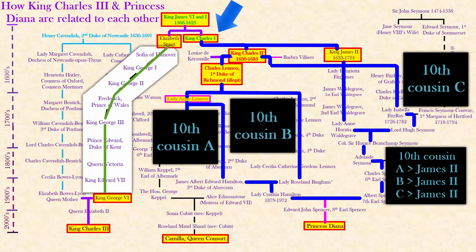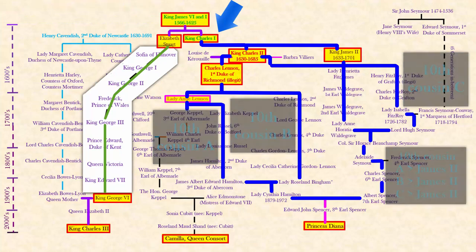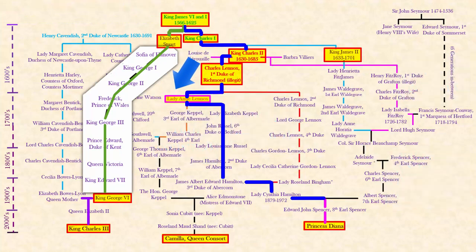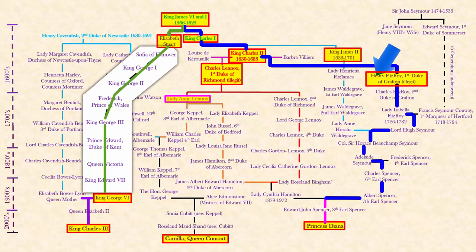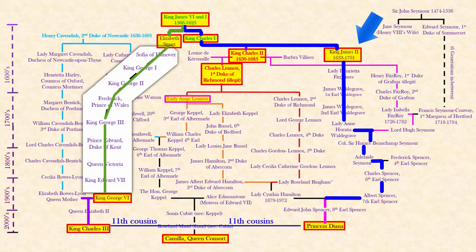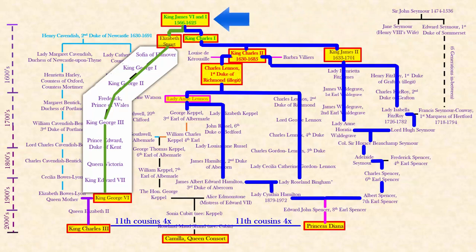Finally, King Charles and Princess Diana are related through James the Sixth and First. Through the line of Lady Anne and her father they are 11th cousins; through Lady Anne's brother the Second Duke they are 11th cousins; through Charles the Second's other son Henry Fitzroy they are 11th cousins again; and through King James the Second they are once more 11th cousins — ultimately making them 11th cousins four times over through James the Sixth and First.